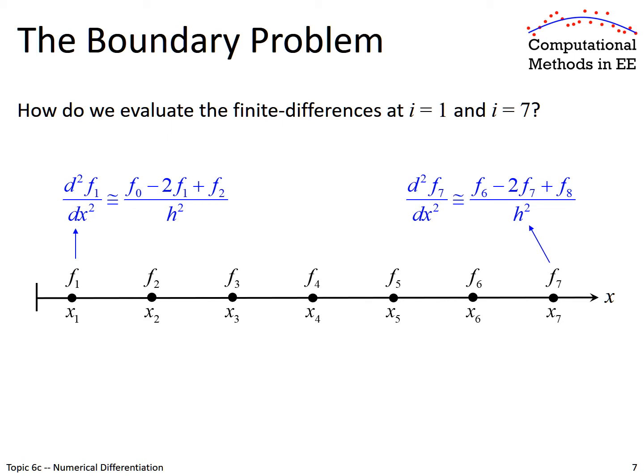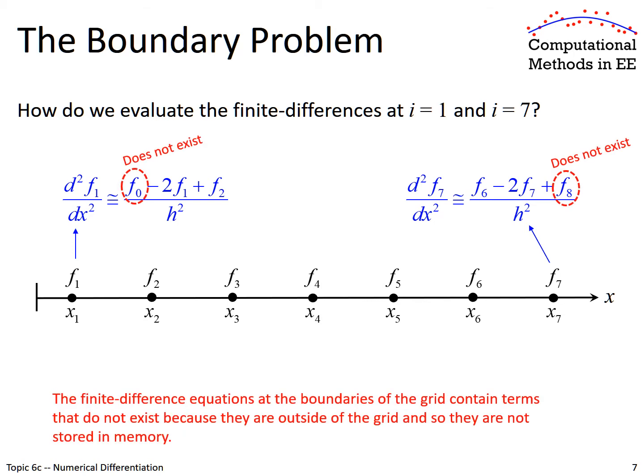But at the very edges of the grid, let's write those finite difference equations and see if there's a problem. If we are evaluating our second-order finite differences with terms on either side, our finite differences require terms from outside of our grid — something we're not even storing. We have to fix this, and the manner in which we fix it is called a boundary condition. This is a numerical boundary condition, and it simply addresses this problem that happens at the edge of the grid.